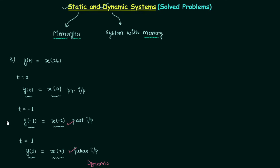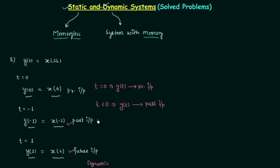We can generalize the results of this problem. When t equals 0, the present output y(t) is dependent on the present value of input. When t is less than 0 (negative), the present output y(t) is dependent on the past values of input. When t is greater than 0 (positive), the present output is dependent on the future values of input.